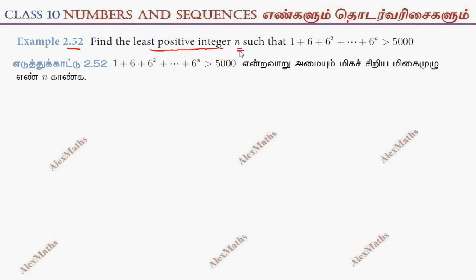Find the least positive integer n such that 1 plus 6 plus 6 square plus dot dot dot 6 power n greater than 5000.